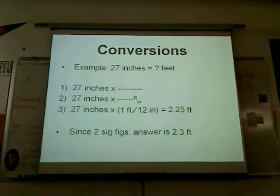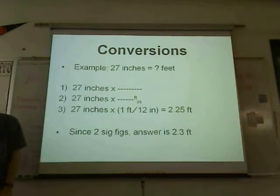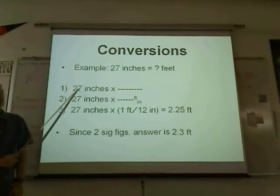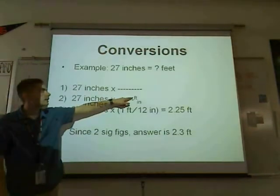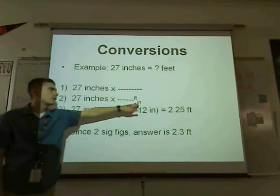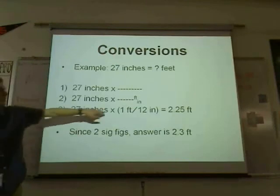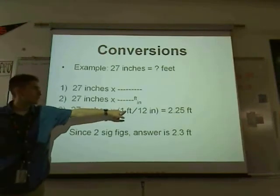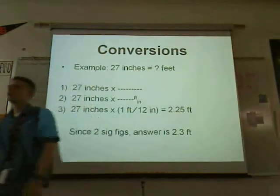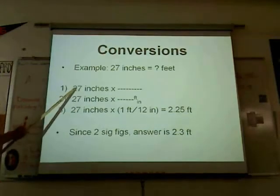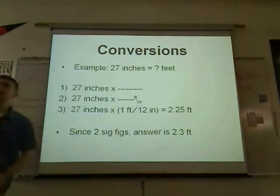Here's an example: 27 inches equals how many feet? First step — information, times, and a line. Second step — put what you want to get to: feet on top, inches on the bottom. Third step — plug in your numbers: 27 inches times 1 foot equals 12 inches, so you put 1 foot over 12 inches. Do the math: 2.25 feet. But you only get 2 sig figs, so it needs to be rounded to 2.3 feet.